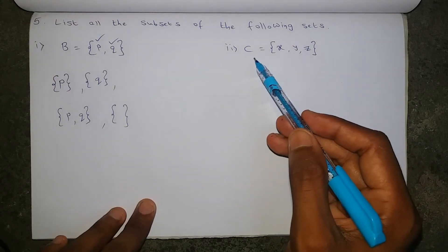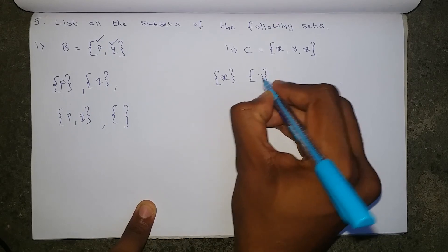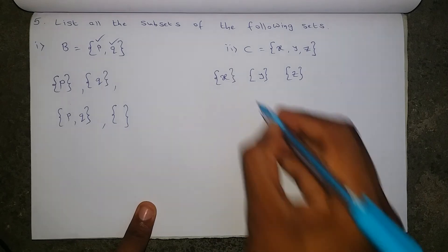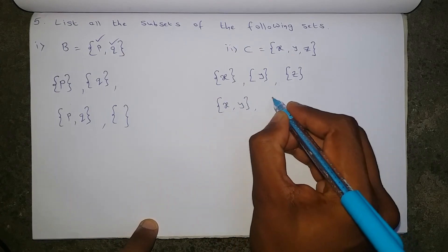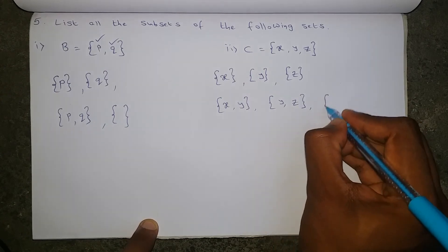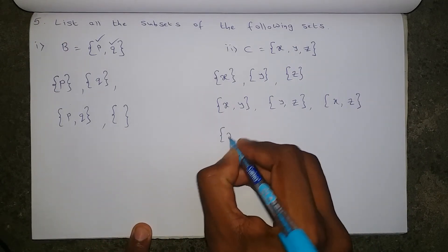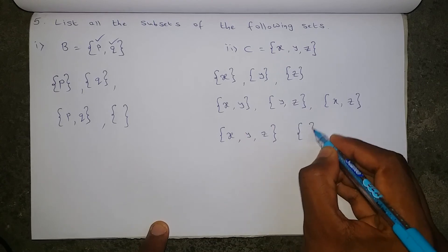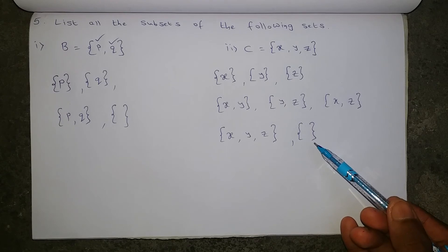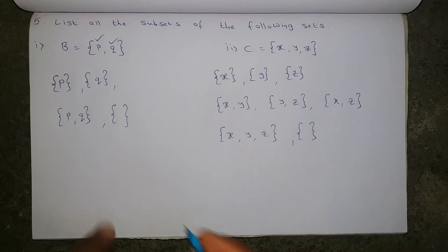For set C equals {X, Y, Z}, first write individual elements: {X}, {Y}, {Z}. Then take two elements at a time: {X, Y}, {Y, Z}, {X, Z}. Then all three elements together: {X, Y, Z}. Also include the empty set. To avoid confusion about whether all subsets are covered, we need to remember the formula for the number of subsets.